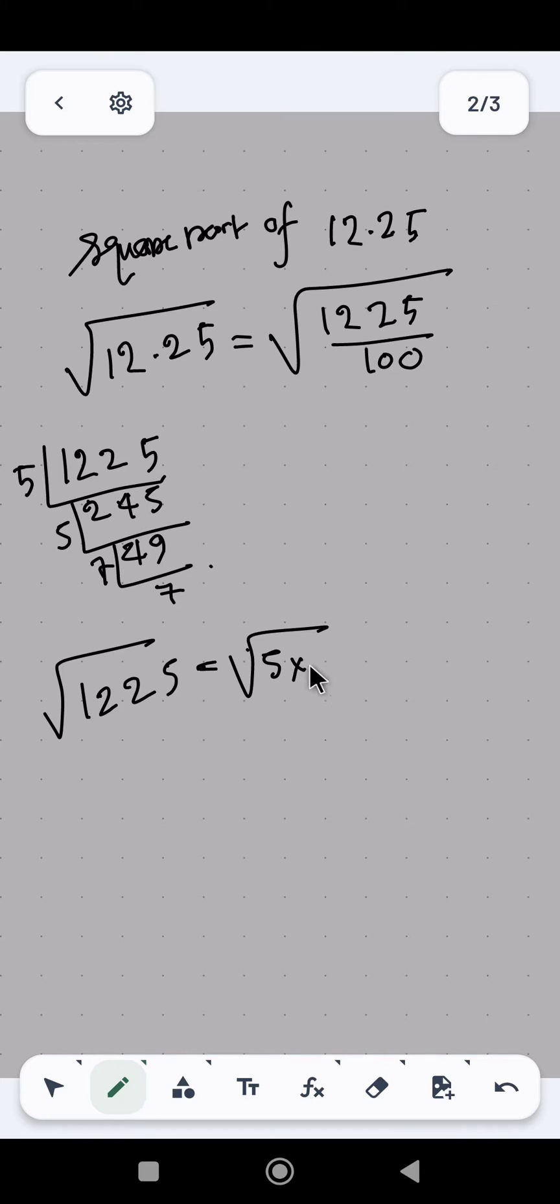Which is basically equals to 5 into 7, means 35. Okay, so from here we can write this that 1225 divided by - the upper portion is basically 35 and the lower portion is basically 10.